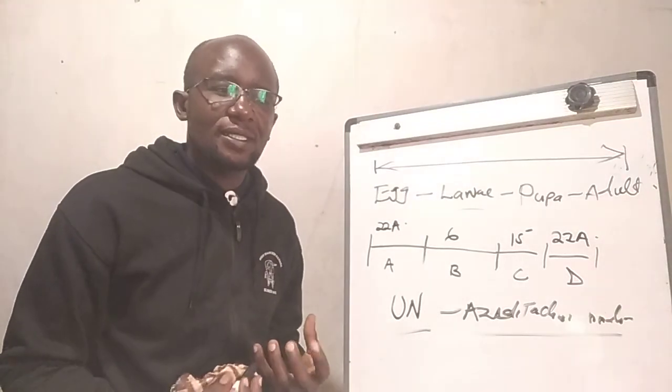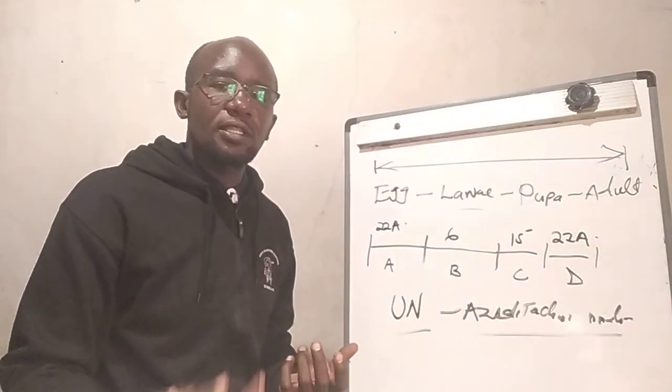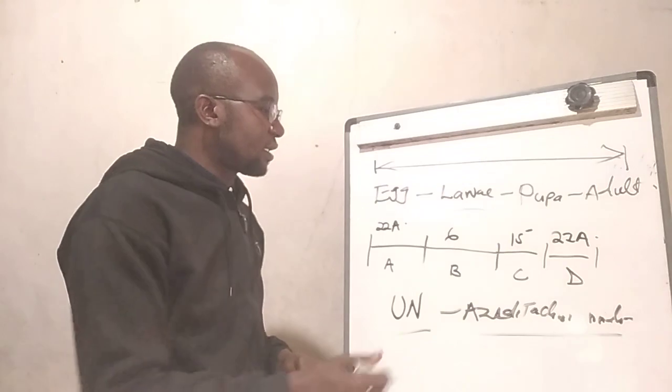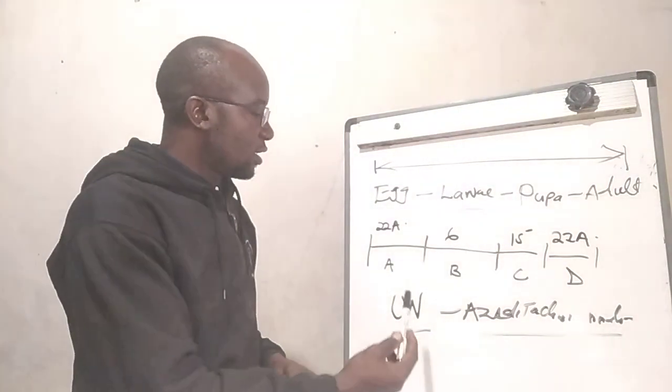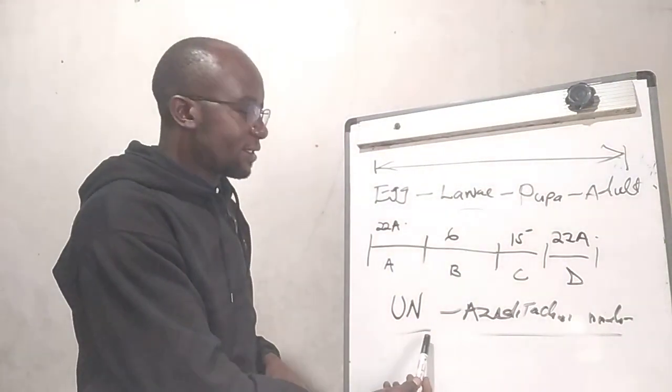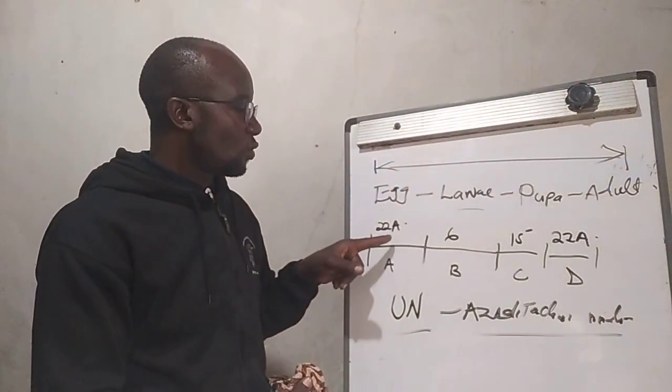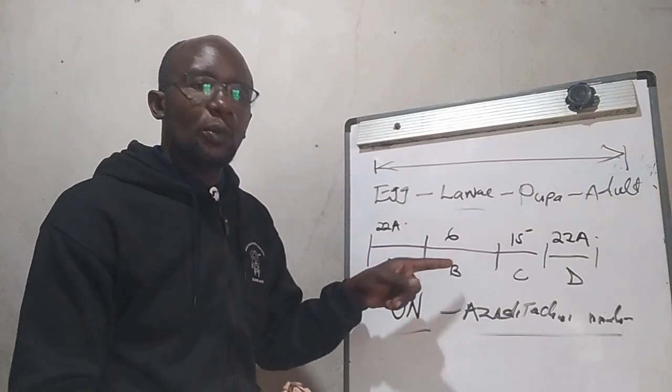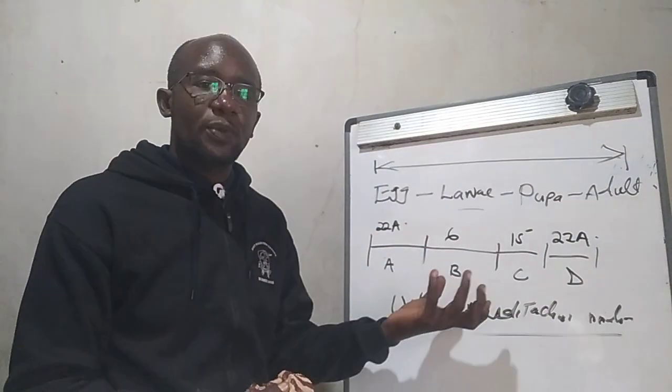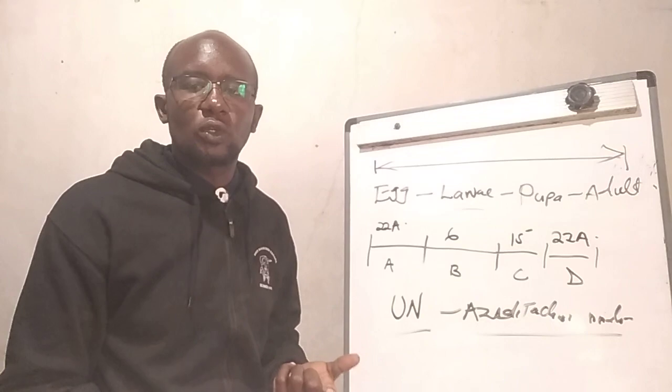The result that we have seen farmers getting is, when you include this pesticide that has different mode of action, and you add to this group, or any group, or in different, all the sprays, then you have better control of Tuta Absoluta.